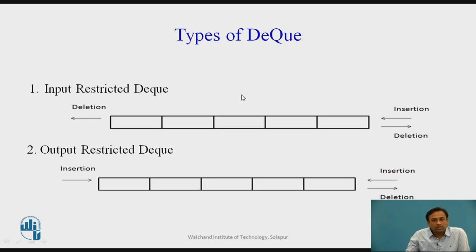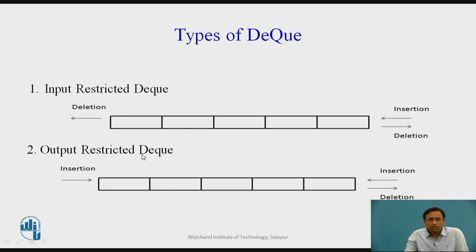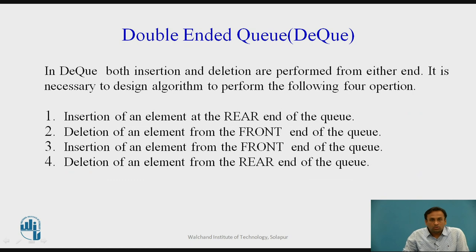There are two types of deque: input restricted deque and output restricted deque. In an input restricted deque, insertion is allowed only from one end — the rear end — while deletions can be done from both the front and the rear end. In an output restricted deque, deletion is allowed only from one end — the front end — while insertions can be done from both ends.